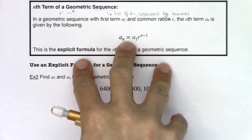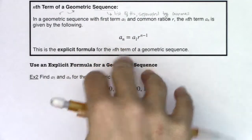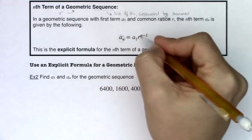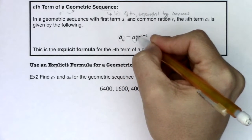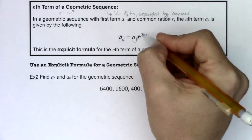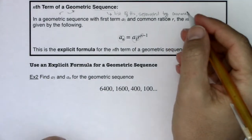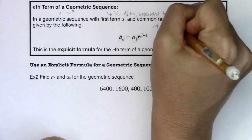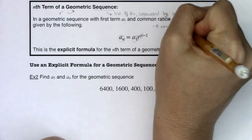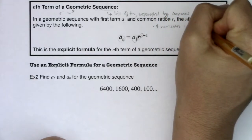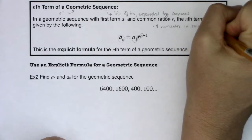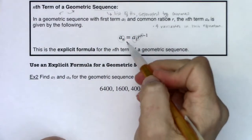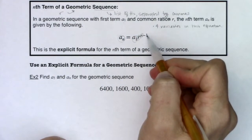Much like the nth term for your arithmetic sequence, there are four variables here. There's a sub n itself, a sub 1, there's R, and then there's n. So there are four variables in this equation.